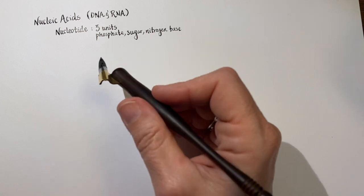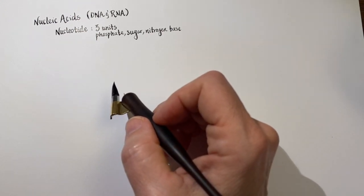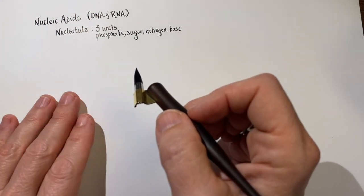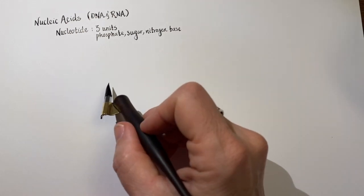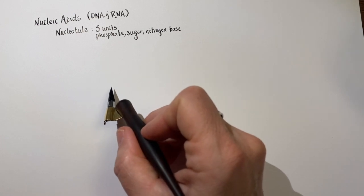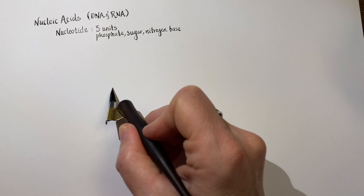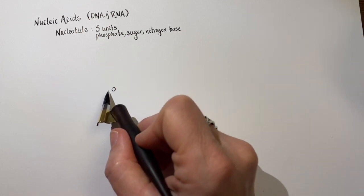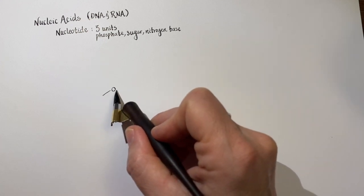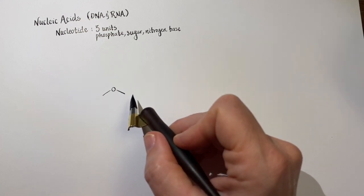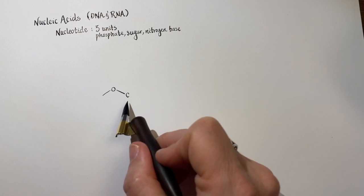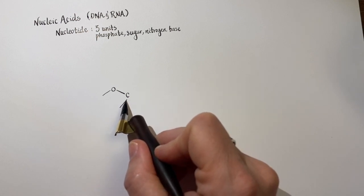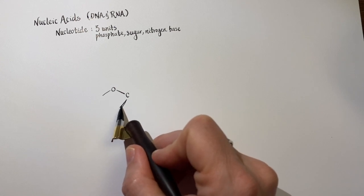So the backbone of DNA and RNA are the phosphate and the sugar. Let's start out with the sugar. I do have another video where I draw some sugars, but here we're going to be really specific with the ribose and the deoxyribose. So what we have is a ring structure, and I'm going to first just draw the ring and then we'll add the specific different parts to it.